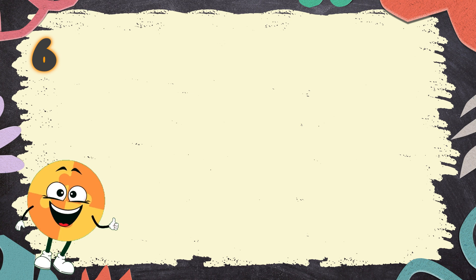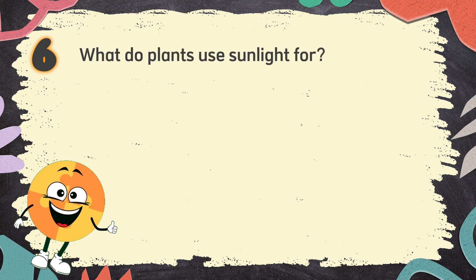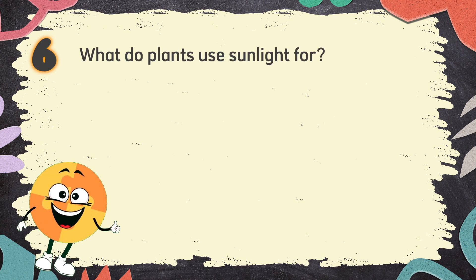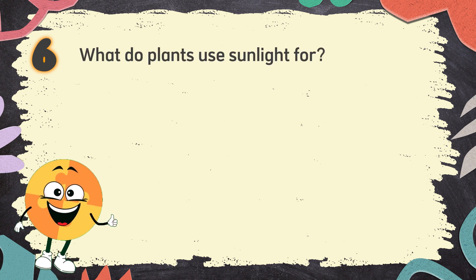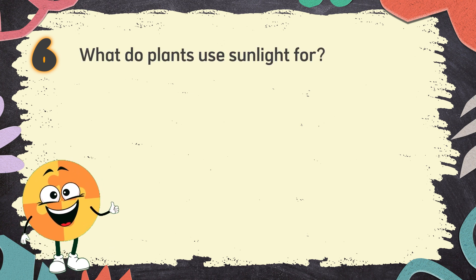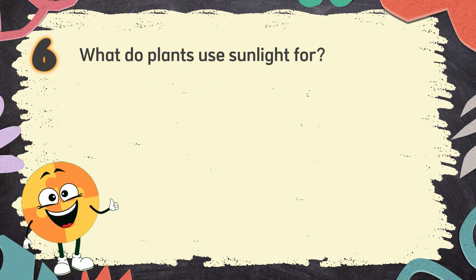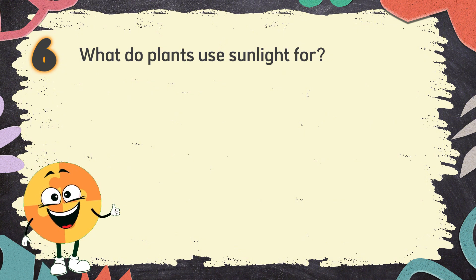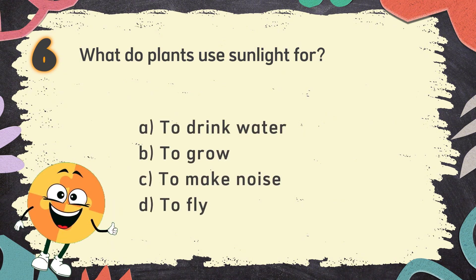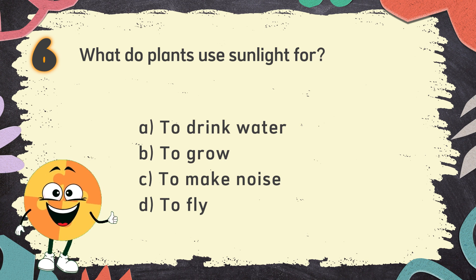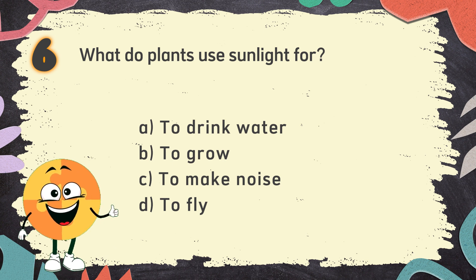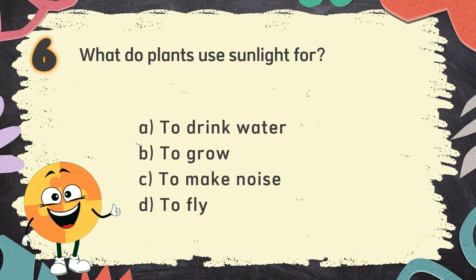Number 6. What do plants use sunlight for? The choices are: A. To drink water, B. To grow, C. To make noise, D. To fly.